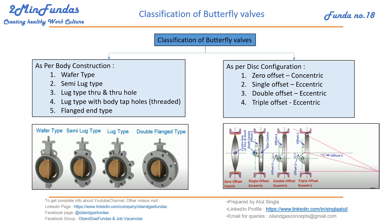The lug type has through and through holes through which we can put studs, connecting to the flanges on either side. Similarly, we have the double-flanged valve — this is the only butterfly valve where we have flanges on both sides. In the other cases, there are no flanges, giving a very compact, light, and economical design. The double-flanged type is a little more costly as it adds two flanges. This is the basic categorization based on body construction.